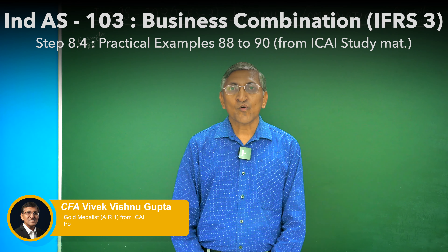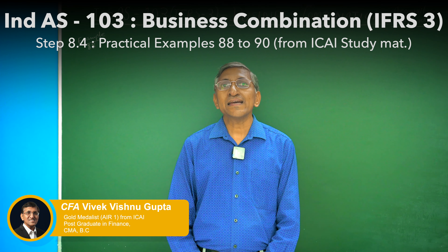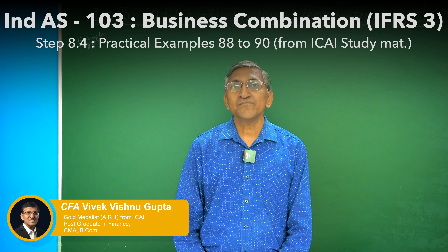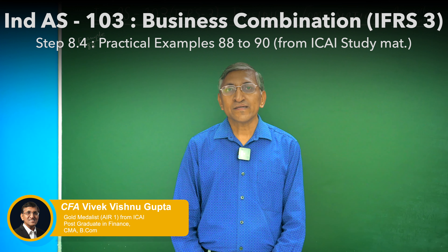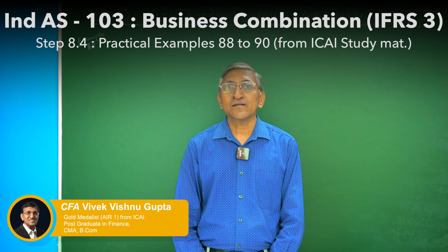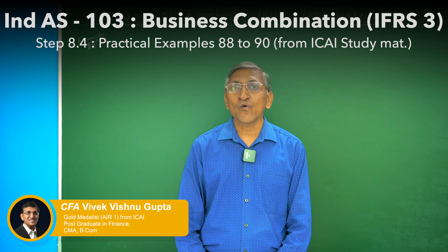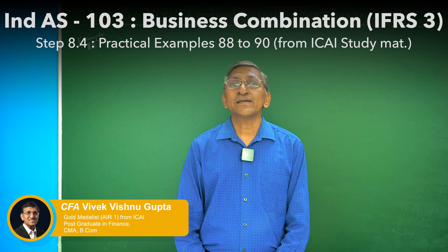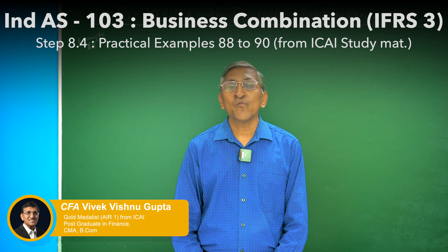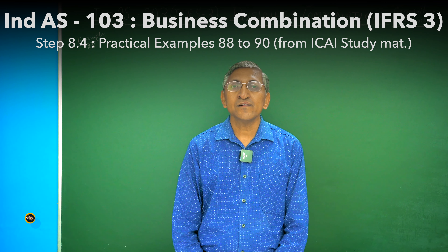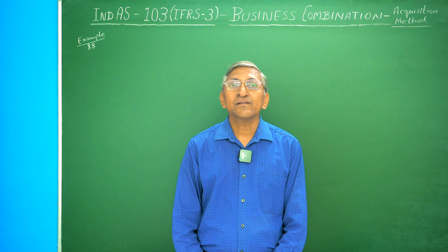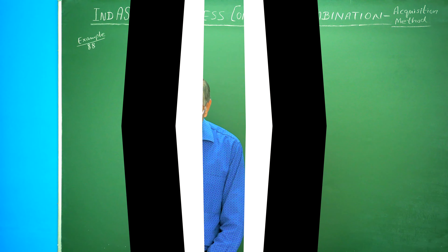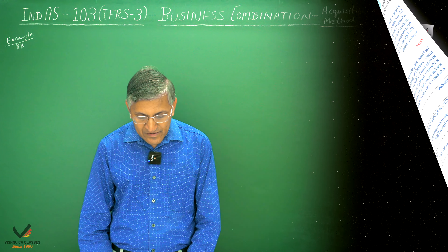Hello, welcome. We are continuing in the Ind AS 103 Business Combination series. In this lecture, we will discuss some more examples related to Step 8.4, which is in relation to measurement of the acquired rights. Let us start with Example 88.